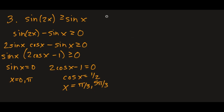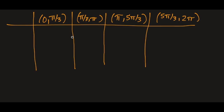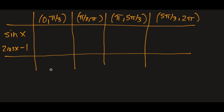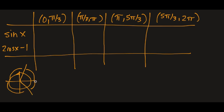Now for the sign chart, we have four intervals: 0 to pi over 3, pi over 3 to pi, pi to 5 pi over 3, and 5 pi over 3 to 2 pi. The sign chart has two factors: sine x and 2 cosine x minus 1. For sine x: it's positive from 0 to pi over 3, positive from pi over 3 to pi, negative from pi to 5 pi over 3, and negative from 5 pi over 3 to 2 pi.